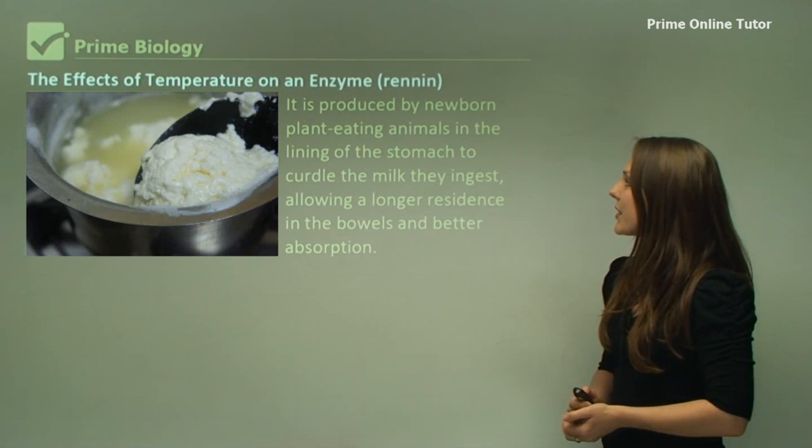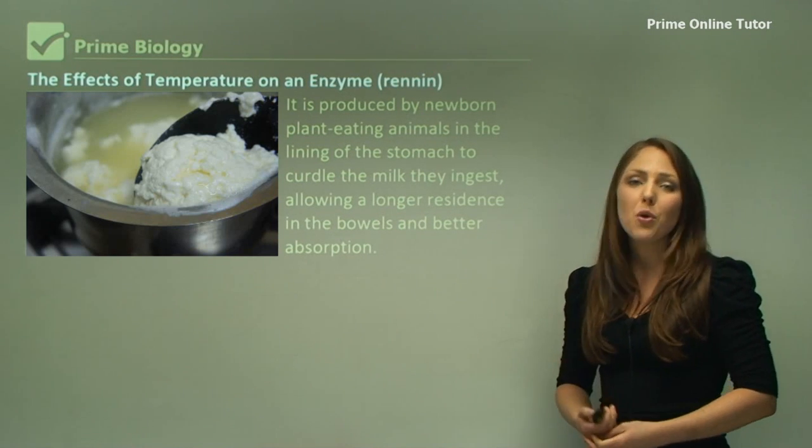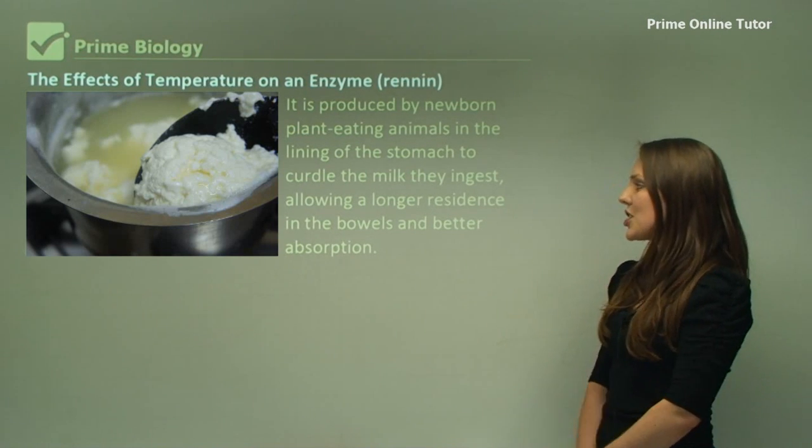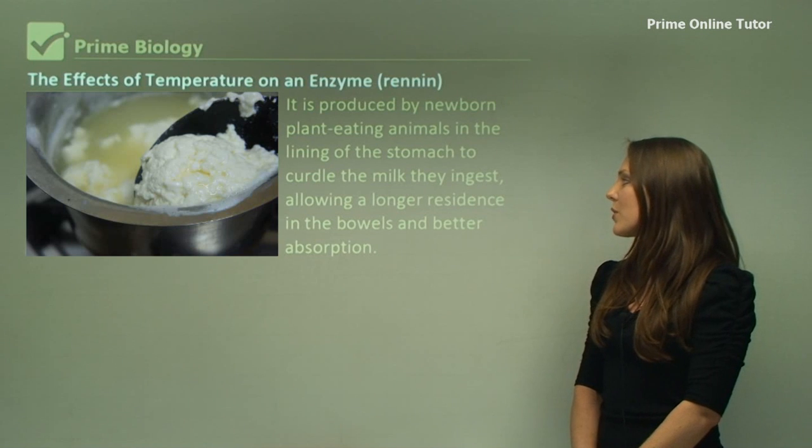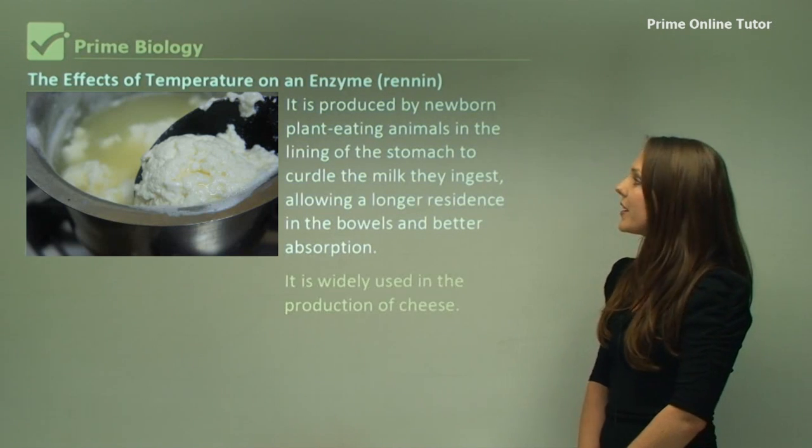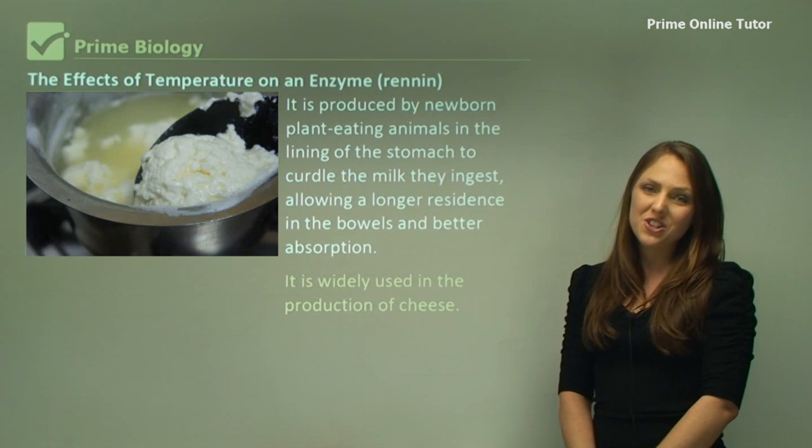What it actually does is it curdles or clots milk products. It's produced by newborn plant-eating animals in the lining of the stomach to curdle the milk they ingest, allowing longer residence in the bowels and better absorption in the body. It is widely used in the production of cheese.